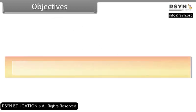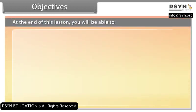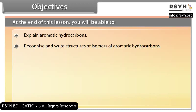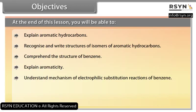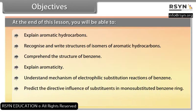Objectives. At the end of this lesson, you will be able to: explain aromatic hydrocarbons; recognize and write structures of isomers of aromatic hydrocarbons; comprehend the structure of benzene; explain aromaticity; understand the mechanism of electrophilic substitution reactions of benzene; predict the directive influence of substituents in mono-substituted benzene ring; and learn about carcinogenicity and toxicity.